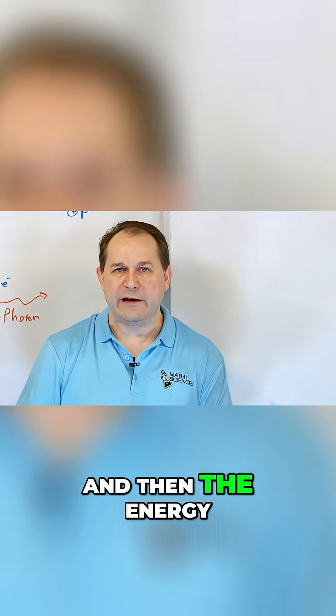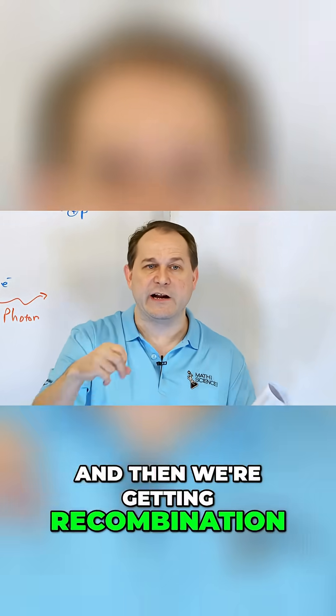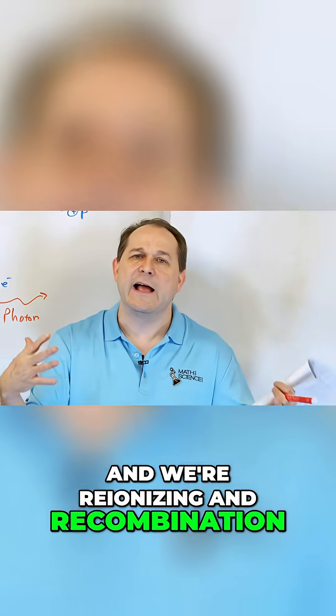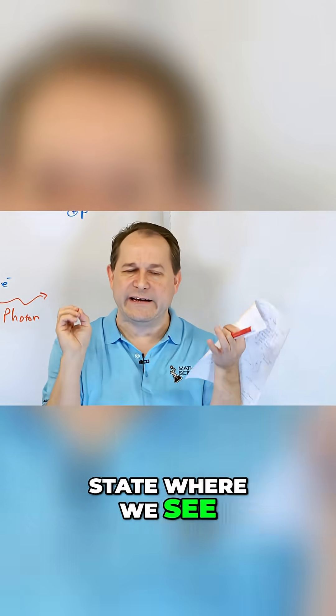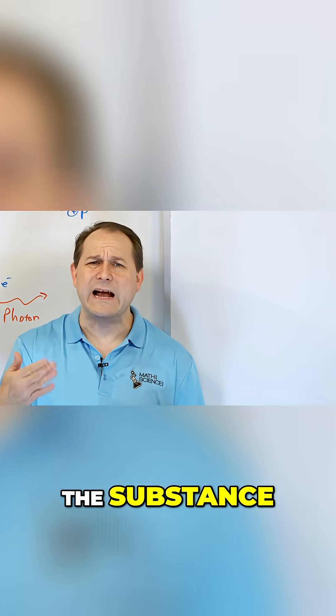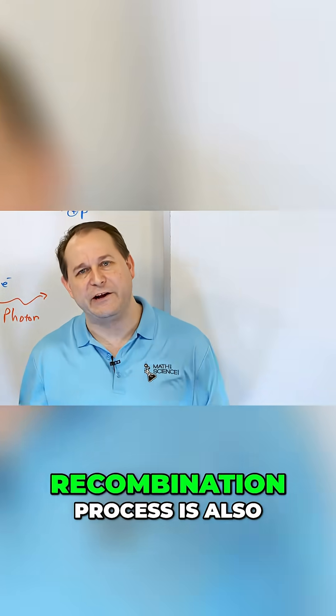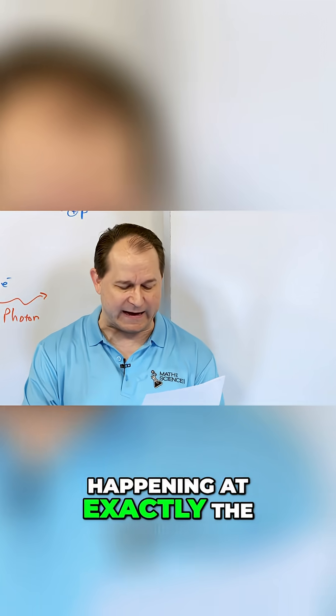And then the energy we're putting in is re-ionizing, then we're getting recombination, and we're re-ionizing and recombination. And there's a steady state where we see light emanating from the substance at a certain rate because this ionization process is happening and the recombination process is also happening at exactly the same time.